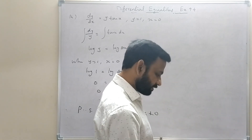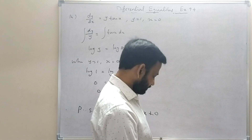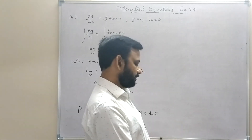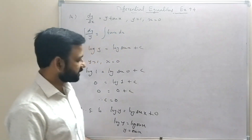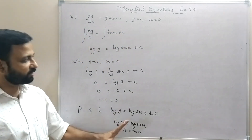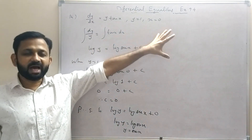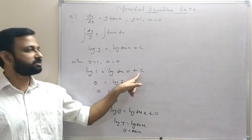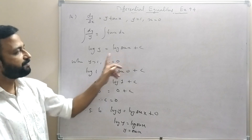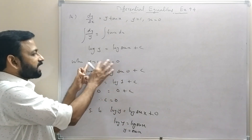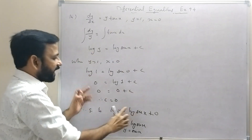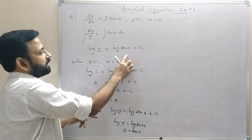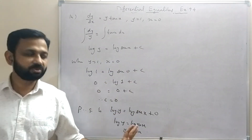To summarize the process: first find the general solution, then replace the given values of x and y to find the value of c, and finally replace c in the general solution to get the particular solution.